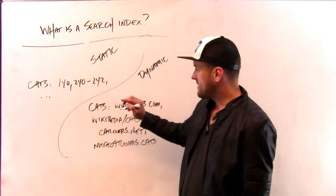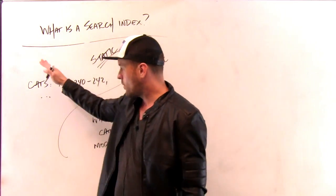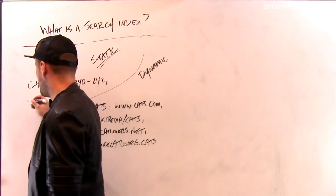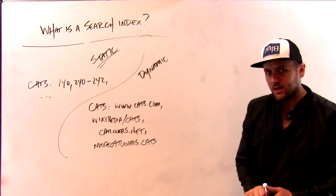The other difference, obviously, is the book search indexes make these static choices, again, static, about what terms to include. So I might have cats, and then I might have some other things. But when the book is being developed and designed, the number of search terms is fixed.